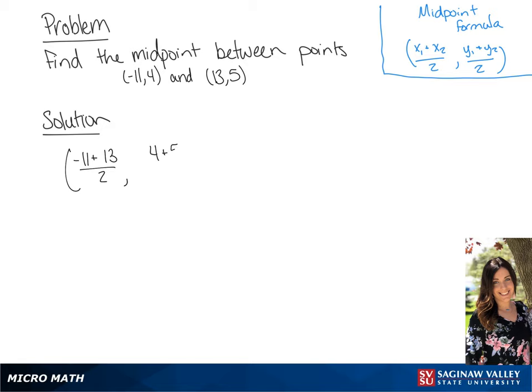So we get negative 11 plus 13 over 2, and 4 plus 5 over 2. If we simplify this, we are going to get 1 and 9 over 2 as our midpoint.